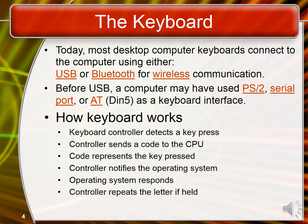How does a computer keyboard work? When we type any character, symbol, or number on the keyboard, the keyboard controller detects which key the user has pressed and sends a code to the CPU. That pressing generates a code, and that code is sent to the CPU by the keyboard controller. The code represents the key pressed by the user. The controller notifies the operating system by processing the code. The operating system responds to the user in the form of output, and if the user presses another key, then this process repeats.